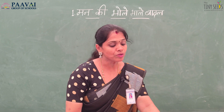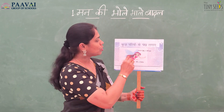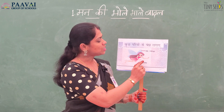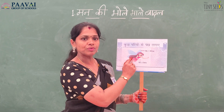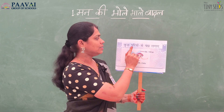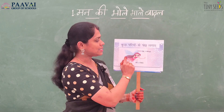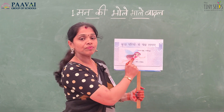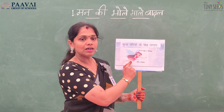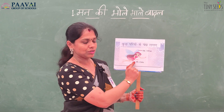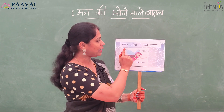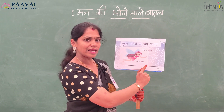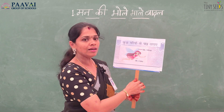Kuchh pariyon se paank lagaye. Pariyon ka matlab hai angels. So the angels will be having wings. For wings we say in Hindi paank. So pariyon se paank lagaye — sometimes if you see in the sky, you can see as if angels are having wings. The shape of the wings you can see in the clouds. The clouds look like the angels in the sky.